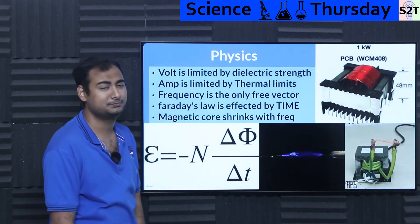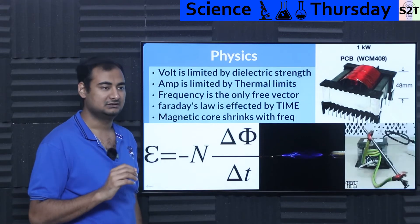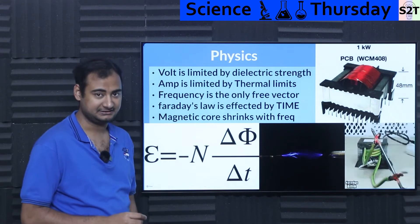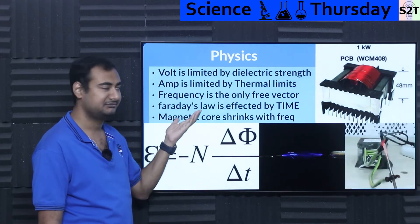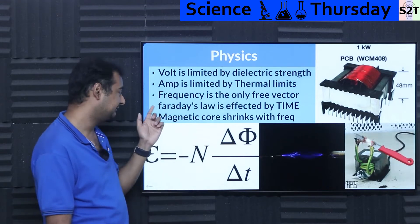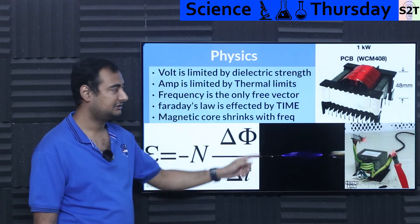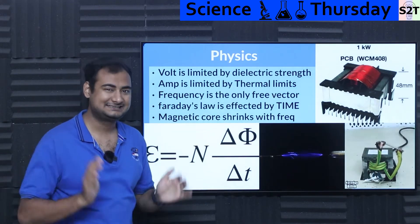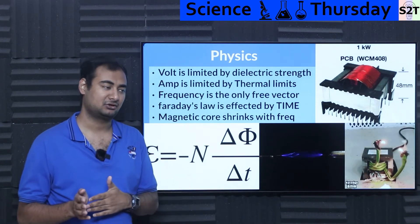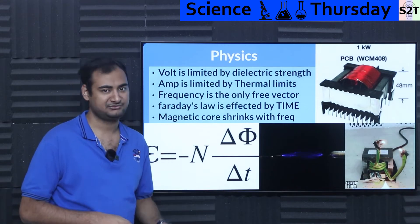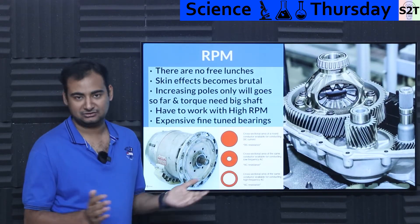If you go to stupid high frequency you can shrink transformer requirements drastically. That's the whole point of the physics here: voltage cannot be increased beyond dielectric limits, thermal limitation limits your current capacity, but the only thing you can increase is frequency. Thankfully in Faraday's law there is a time vector, so you can utilize it and make your transformers, motors, and generators exponentially smaller — not 10% smaller, but five times, ten times smaller.